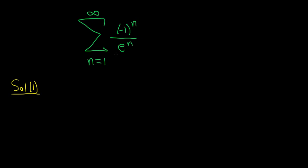When you're using the alternating series test, the first thing you want to do is identify the non-alternating part. That's the part without the (-1)^n.